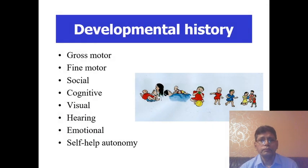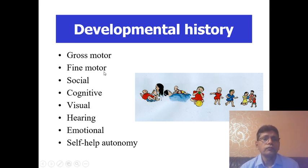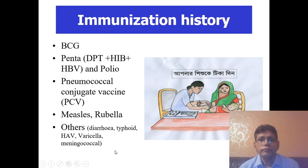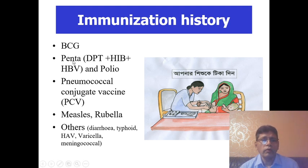Development history should be evaluated according to domains of development: gross motor, fine motor, social, cognitive, visual, hearing, emotional, and self-care. Immunization history — usually started at birth; the pentavalent vaccine is given from six weeks, then pneumococcal vaccine, then measles-rubella at nine months and 15 months, and other vaccines.